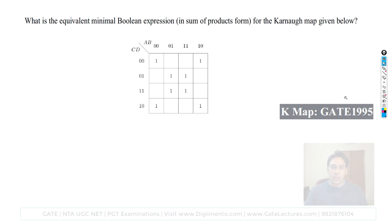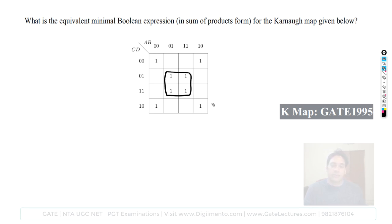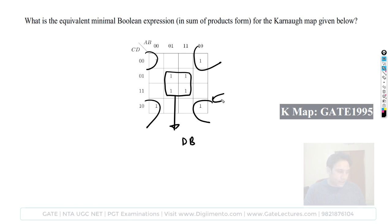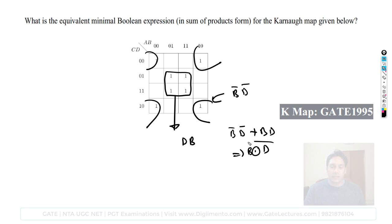Next question: find the equivalent minimal boolean expression for the given K-map. One sub-cube covers the ones giving BD, and another sub-cube covers the zeros giving B-complement·D-complement. The equation is B-complement·D-complement plus BD, which equals B XNOR D. The entire K-map represents B XNOR D — a very straightforward question.